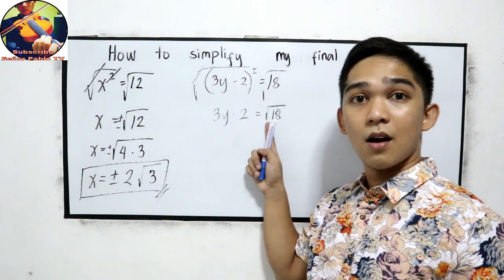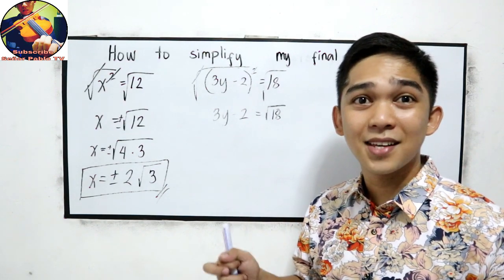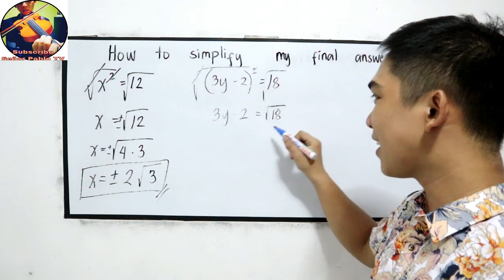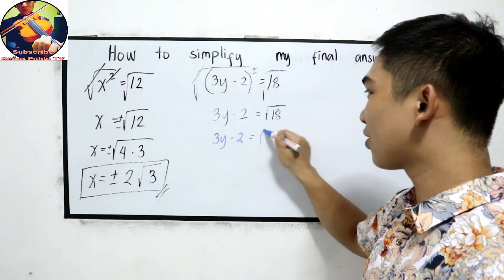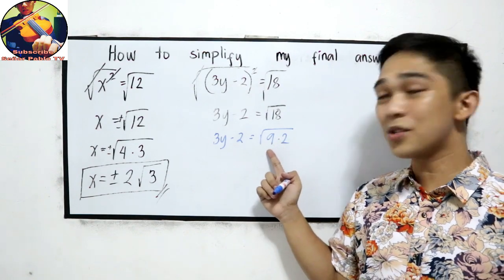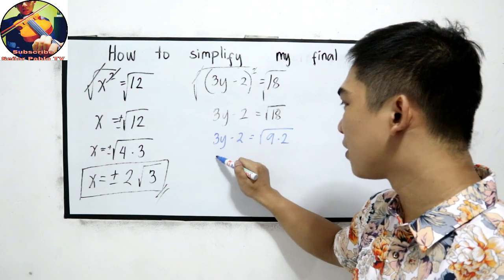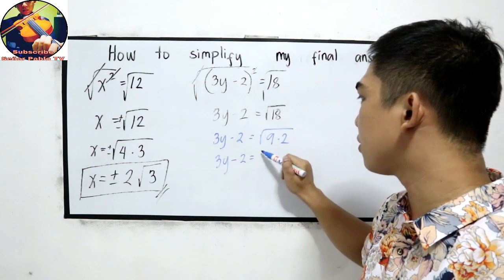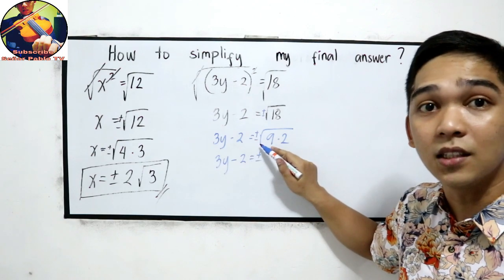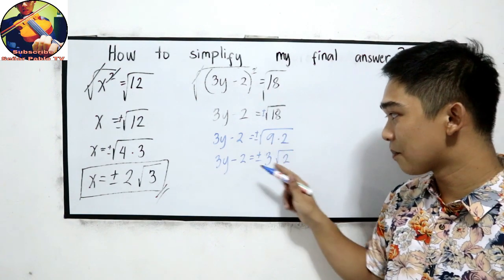18 is not a perfect square number, so we need to determine the highest perfect square factor of 18. The factors are 9 times 2. We choose 9 because 9 is a perfect square number. So we have 3y minus 2 is equal to plus or minus the square root of 9 — which is 3 — times the square root of 2. This is now in simplified form.